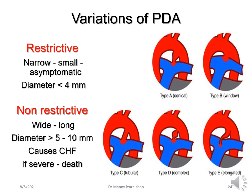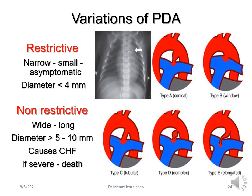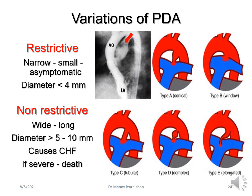There are lots of variations of the PDA: Type A is cone-shaped, Type B is like a window, Type C is tubular, Type D is complex, and Type E is elongated. It can result in cardiomegaly, and on chest x-ray you may see a variation around the aortic arch, though this requires expert radiological interpretation. On an aortogram, you can see the ductus connecting the pulmonary artery to the aorta.